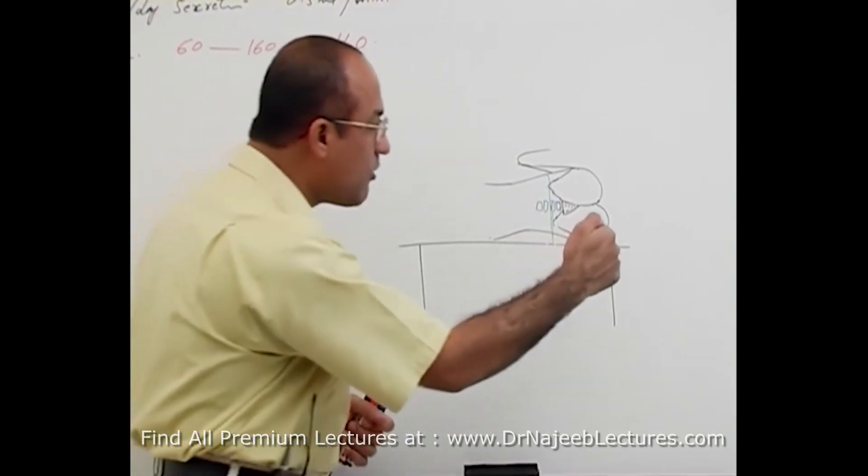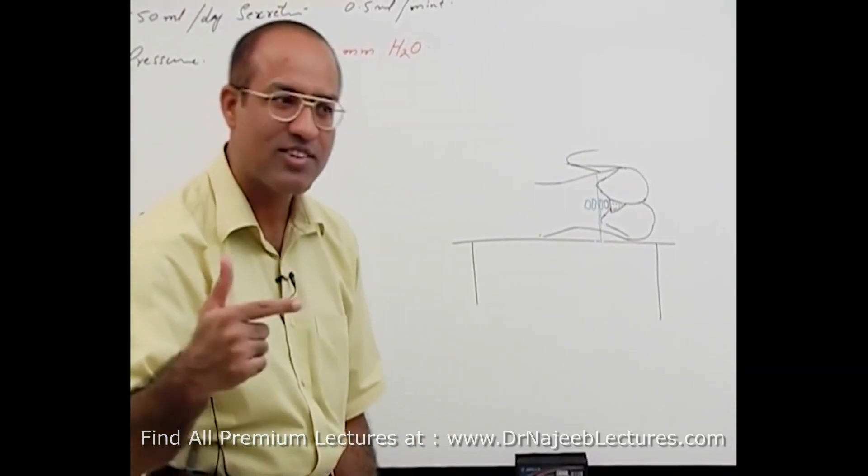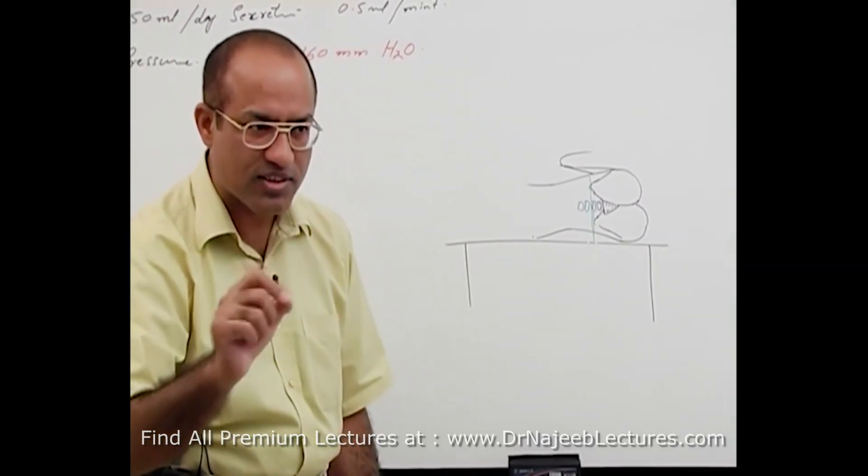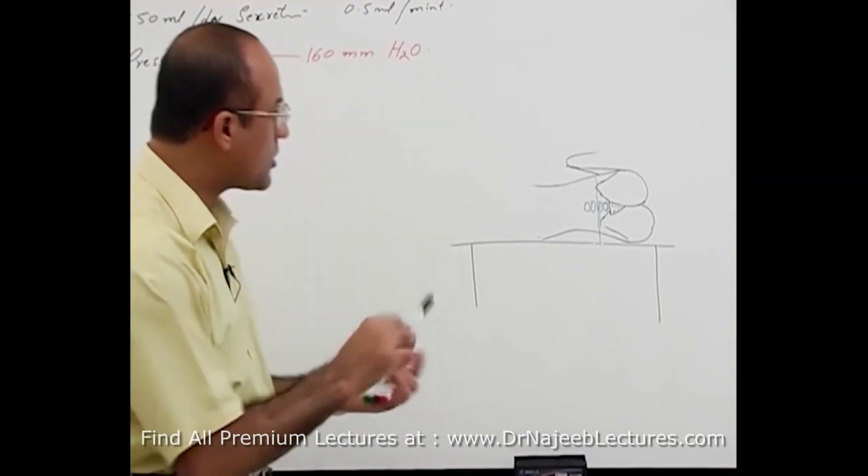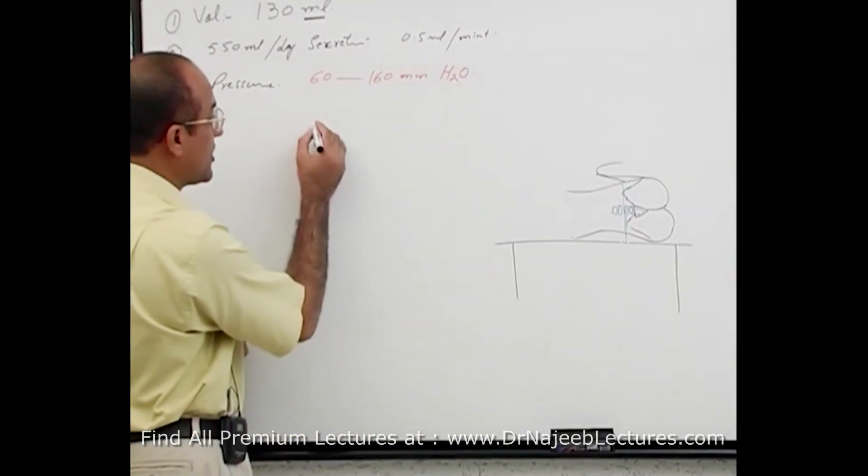So, as needle will be going in, it will pass through or pierce certain structures. Eventually, it reaches to subarachnoid space and then CSF come out. Now, what do you think? Which structures will be pierced? This is a very important question.